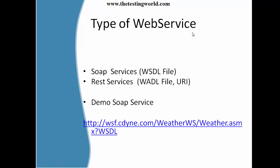Two types of services are available: SOAP service and REST service. For a SOAP service we need a WSDL file, and while working with REST services we need a WADL file or a URI. The WSDL file contains complete information about what functionalities are available in a particular service, what kind of input the service accepts, and what kind of output it provides.